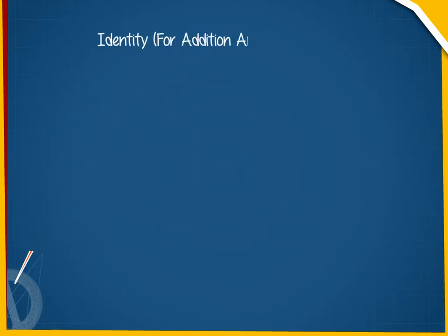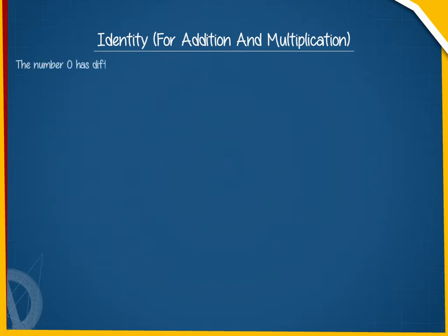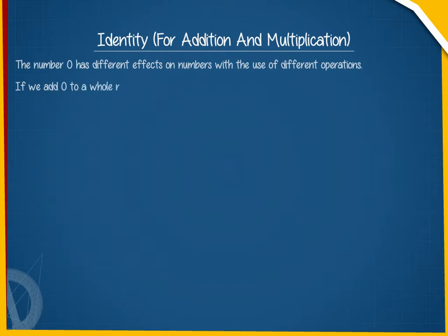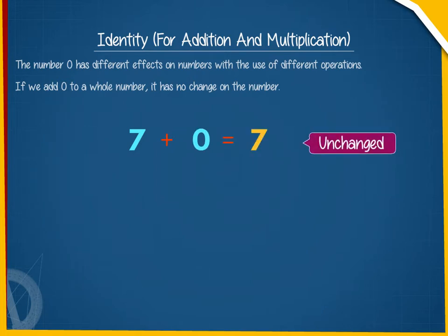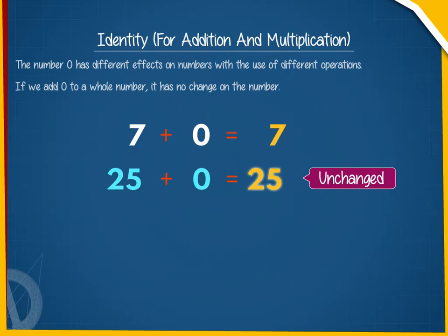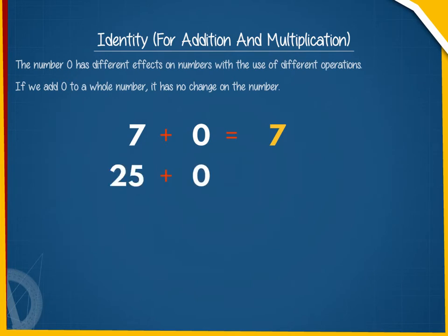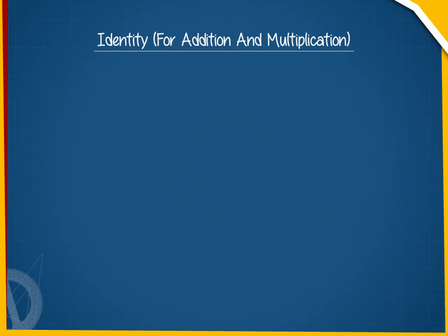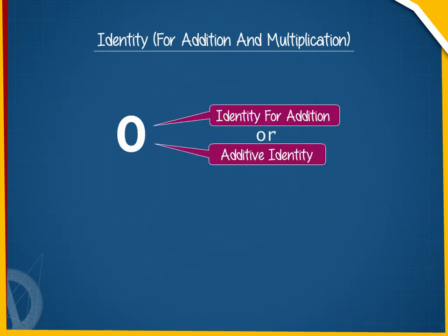The number zero has different effects on numbers with different operations. If we add zero to a whole number, it has no change on the number. For example, adding zero to seven leaves seven unchanged — seven plus zero is equal to seven. Similarly, adding zero to 25 leaves 25 unchanged — 25 plus zero is equal to 25. We call zero the identity for addition, or additive identity, for whole numbers.